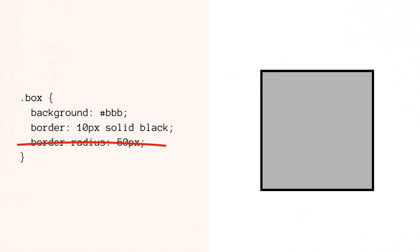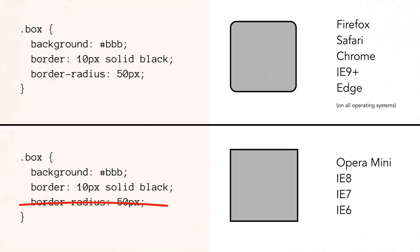Basically, we can write this code and we've got two different experiences. In Firefox, Safari, Chrome, IE9, Opera, and Edge and all those other browsers — except for these certain four — we're going to have a gray box with a black border with round corners. And then in Opera Mini, IE8, IE7, and IE6, we're going to have a gray box with black borders and square corners.